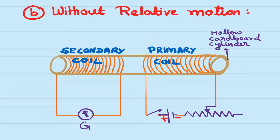Without relative motion between the magnet and the coil, induced current can still be produced. For that purpose, one has to take a hollow cardboard or wooden cylinder on which there are two sets of insulated copper wire windings, just like a solenoid. One copper winding must be connected to a source across a plug key, and the other is connected to the galvanometer. The coil connected to the source — a cell or battery — is called the primary coil, and it behaves like a magnet when the circuit is closed. The coil connected to the galvanometer is the secondary coil in which induced current is produced.